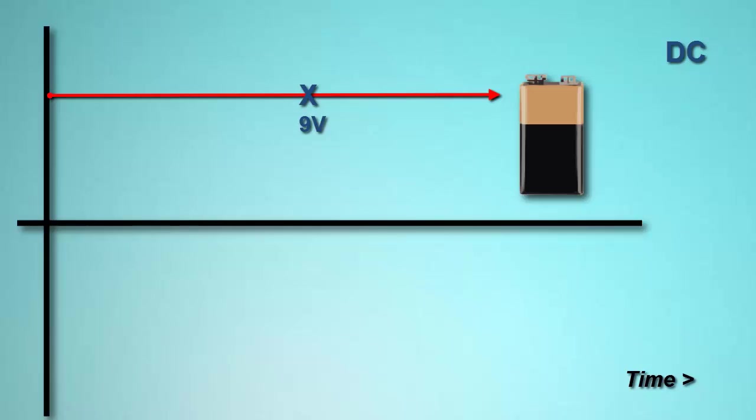Note that our straight line graph is somewhat idealized. In a system with an actual load, the voltage would gradually slope downward over time. But our central point remains the same. All we need to do to determine the voltage is to simply take a measurement at any moment.